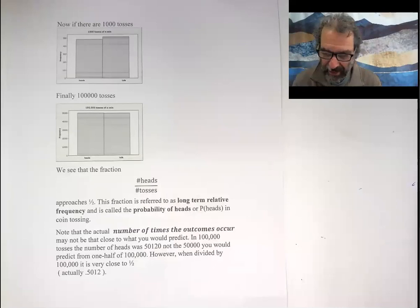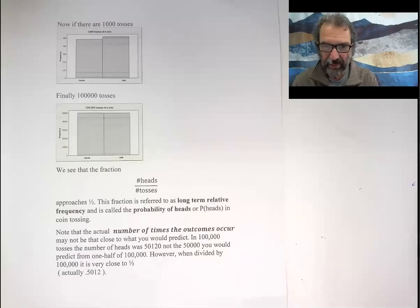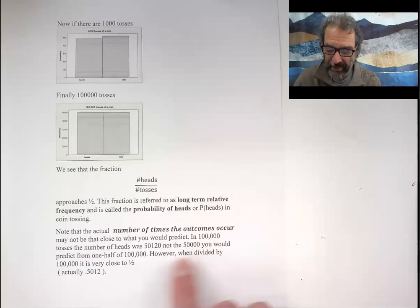Note that the actual number of times the outcomes occur may not be that close to what you would predict. Here it says what it was: 100,000 tosses, the number of heads was 50,120. So it's 120 over 50,000. But when you divide that by 100,000, you can barely see the difference in height between 50,000. So 50,000 and 50,120 are almost the same number. If you make a bar of those two heights next to each other and you start the graphs at zero, you're not going to see much of a difference. That's because when you divide that small change by 100,000, both of those numbers divided by 100,000 are basically a half.